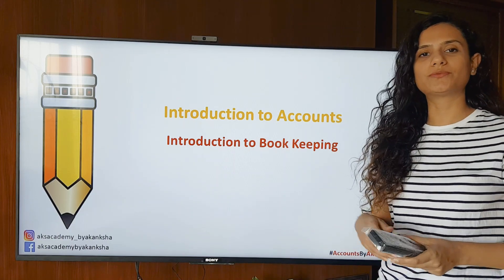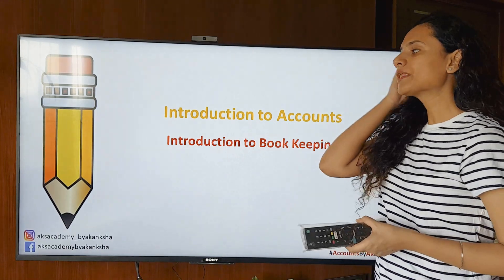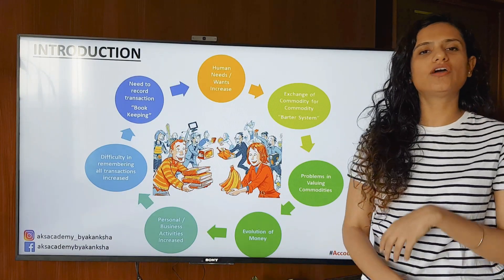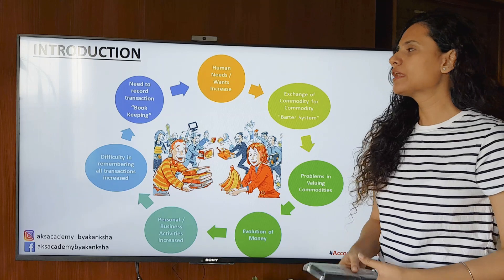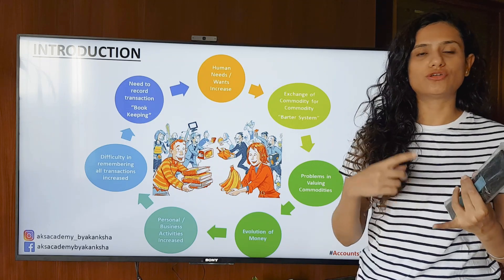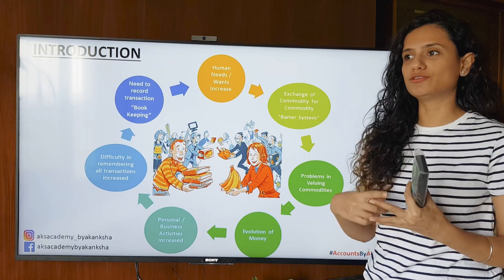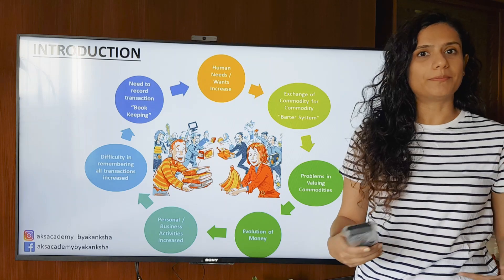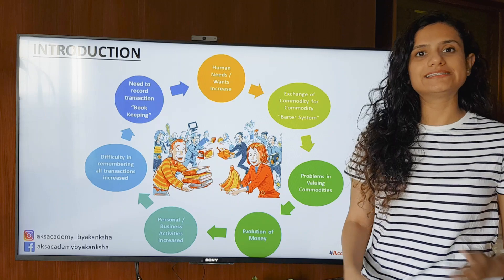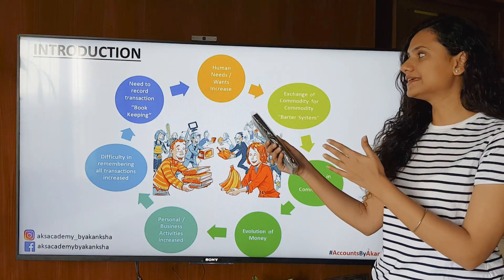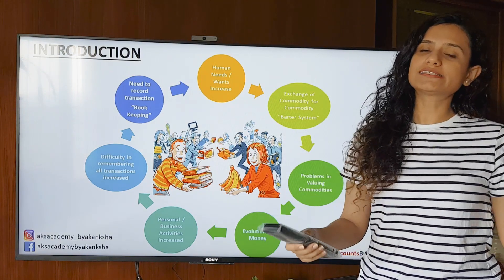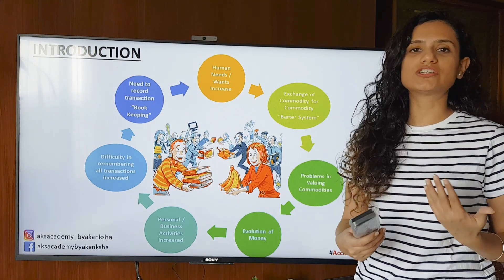The first topic we'll understand today is introduction to bookkeeping — what is bookkeeping and how did it originate? As you all know, human needs and wants are unlimited. If you get a phone, you want WiFi; if you get a TV, you want a set-top box. Human wants are unlimited, and that's why there's always a constant exchange of commodities. In ancient times, this was done through the barter system.